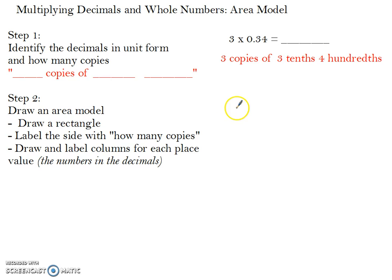Step 2 is we want to draw our area model. You start with drawing a rectangle. You want to label the side with how many copies you have. We have 3 copies. Next, you want to draw and label columns for each place value. Since I am identifying 2 place values, I'm going to draw 2 columns, 1 for tenths and 1 for hundredths. And then I want to label each column with the appropriate amount of my decimal. My first column will be 3 tenths. And then 4 hundredths.